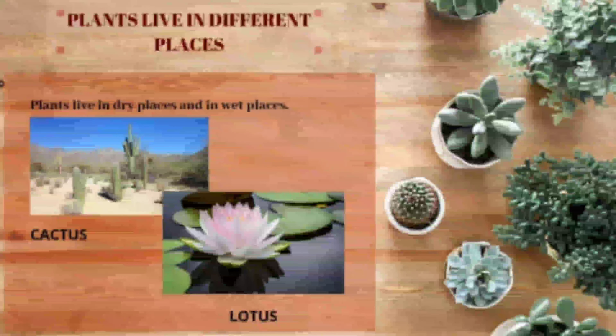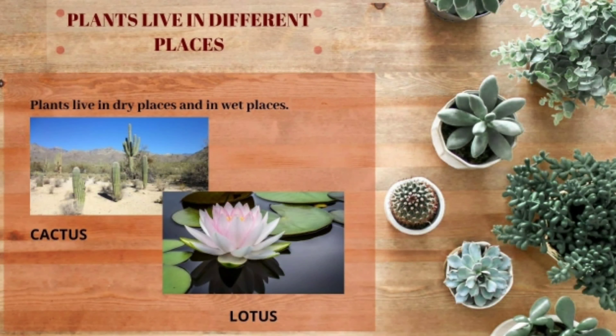Plants live in dry places. For example, cactus. You know what a desert is, right? We call it Padang Gurun in Bahasa Indonesia. While lotus lives in wet places such as a lake, pond, etc.